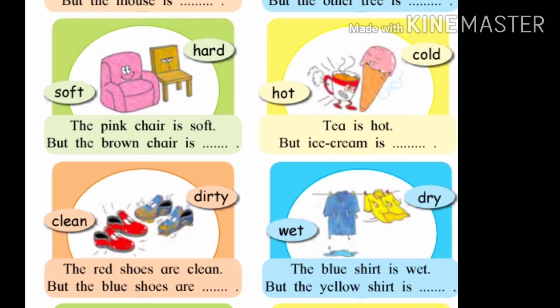Now come to the next picture. The shoes are given — the red shoes and the blue shoes. Two words are given: clean and dirty. Clean word is written near the red shoes and dirty word is written near the blue shoes. The red shoes are clean but the blue shoes are dirty. Dirty is the opposite of clean.